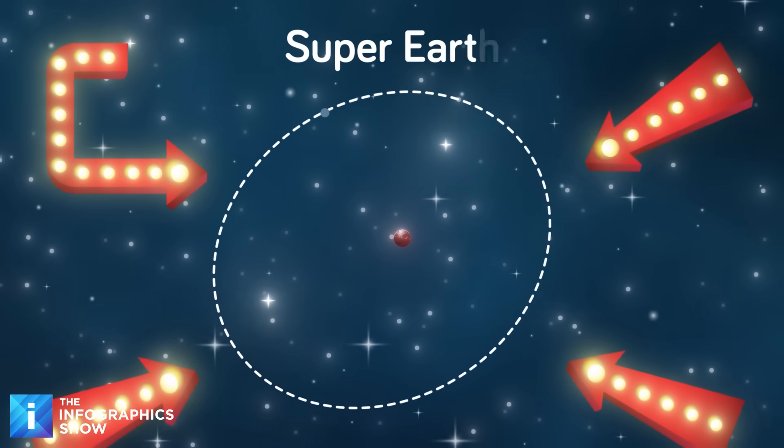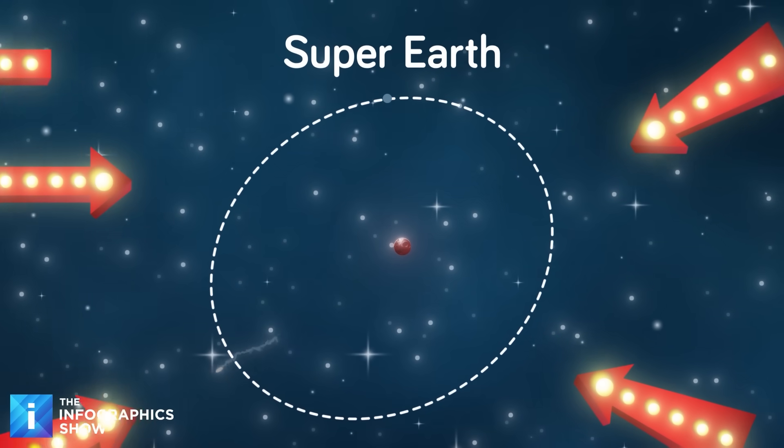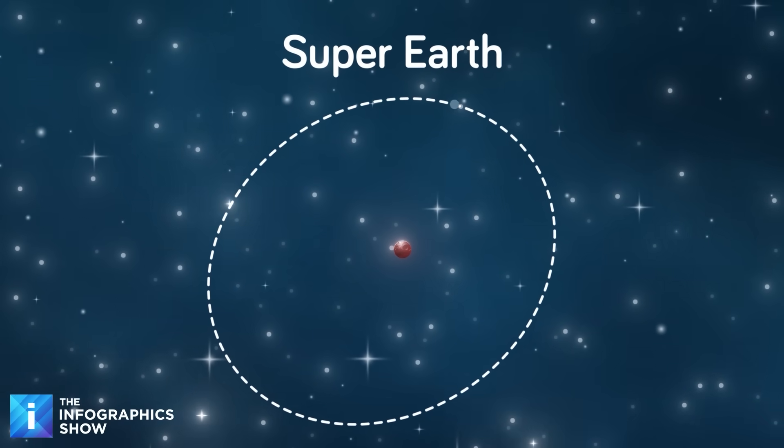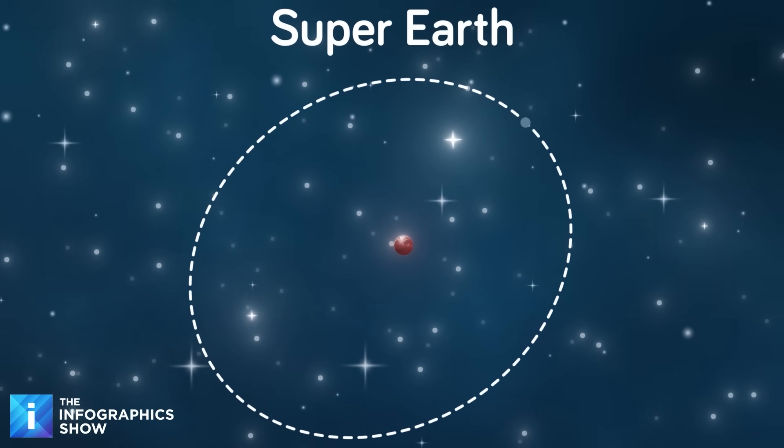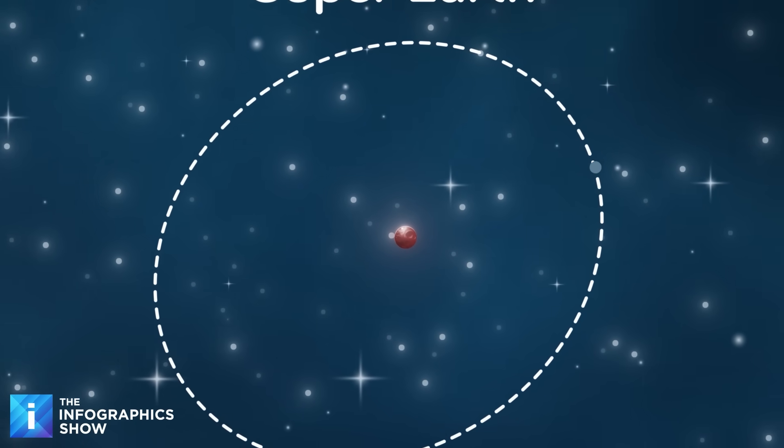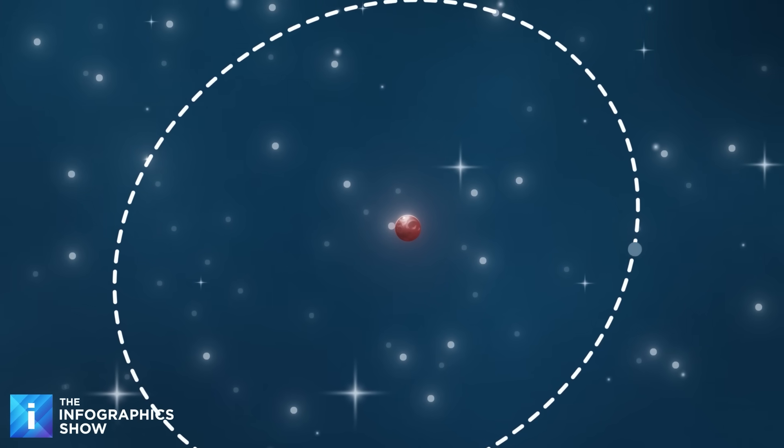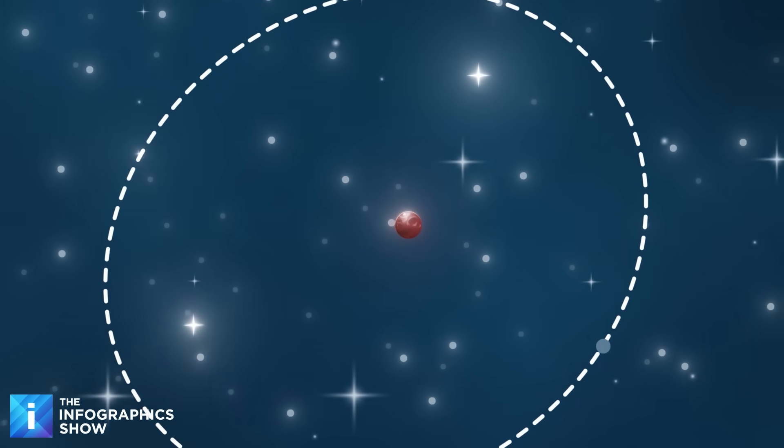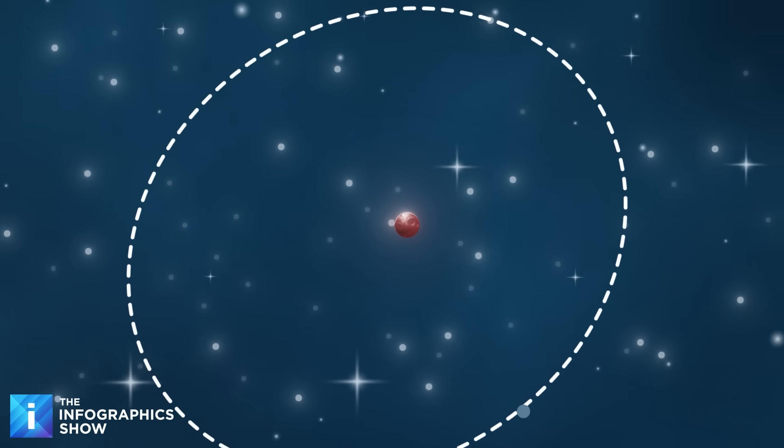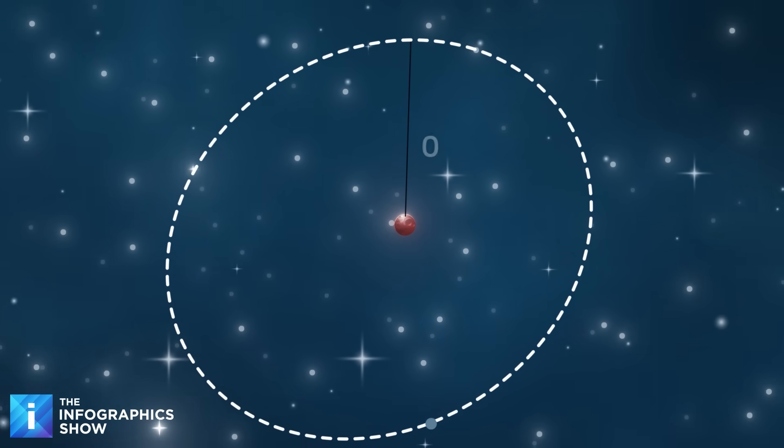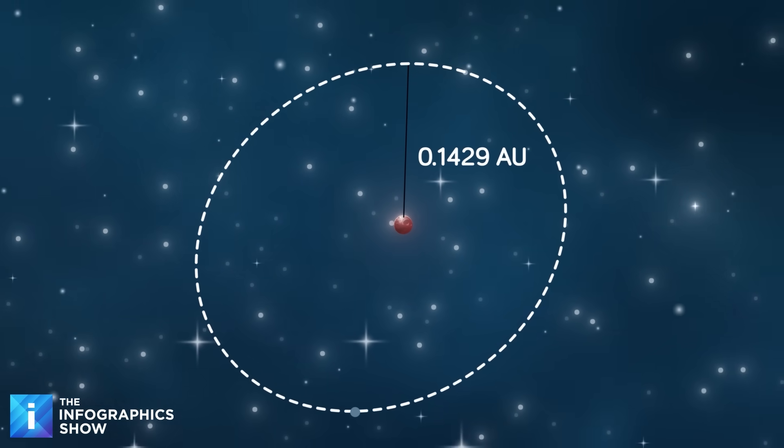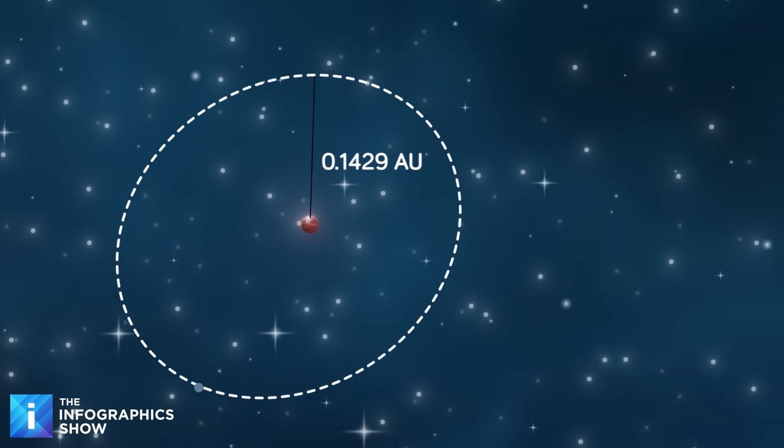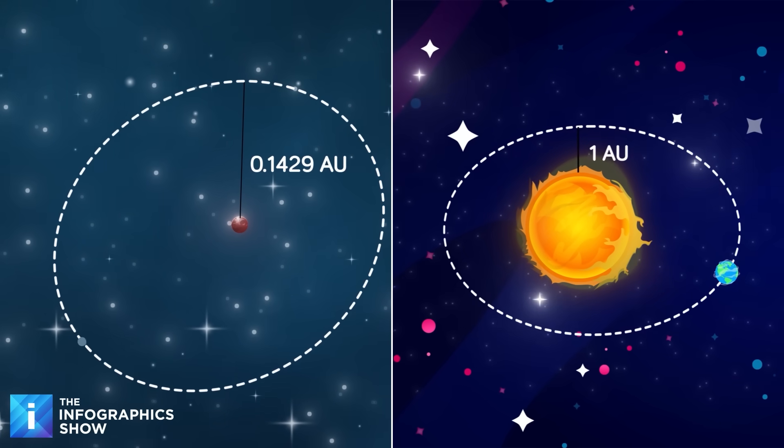But K2-18b is also called a super-Earth because the distance from its star means that it sits in the habitable zone where temperatures that create liquid water could exist. Because its red dwarf sun is significantly cooler than our own, K2-18b sits significantly closer to its star, with an orbital radius of 0.1429 astronomical units compared to the Earth's 1 AU from the sun.